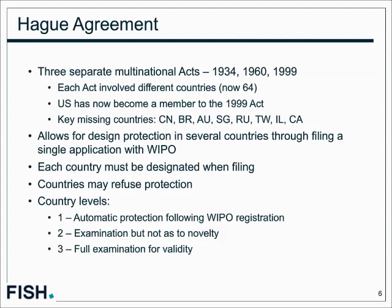The Hague Agreement is a nomenclature describing a system of acts that started back in 1934. There have been three acts: 1934, 1960, and 1999. The 1934 act is fairly irrelevant after about 2010. There are now 64 countries involved in the Hague, and the US and Japan both joined recently. Notably, there are key countries not part of this agreement — most significantly China, but also Brazil, Australia, Singapore, Russia, Taiwan, Israel, and Canada.